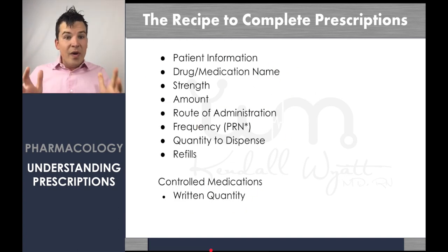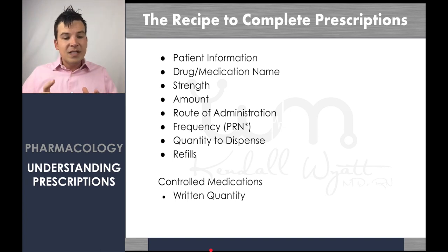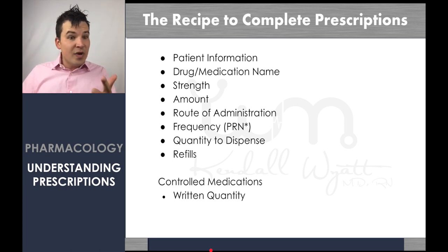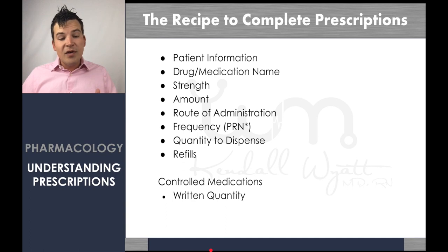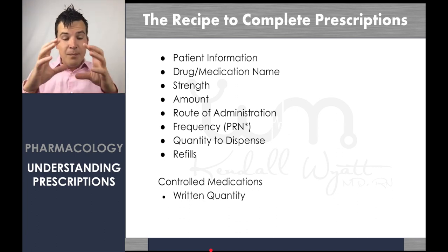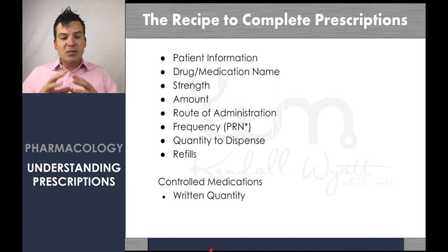All the parts that go into a complete prescription include: patient demographic information, the drug you're giving, the strength and the amount, the route it's supposed to be given, the frequency it's supposed to be given, the number that's supposed to be dispensed and given to that patient, and of course how many refills. We're also going to go over controlled medications and some other things you've got to know.